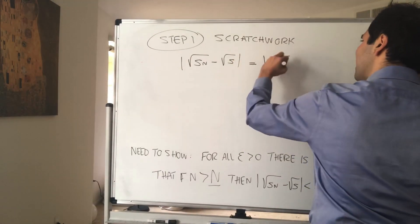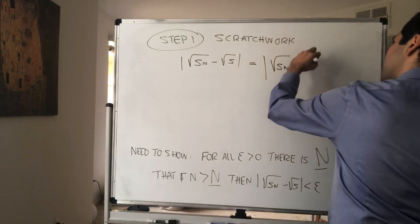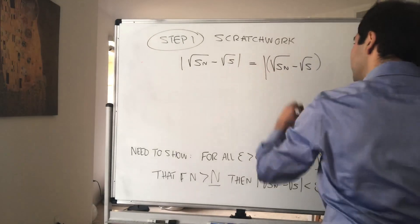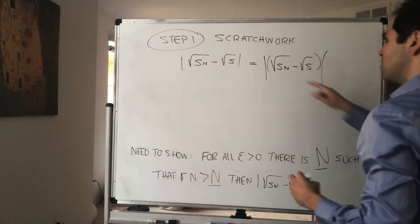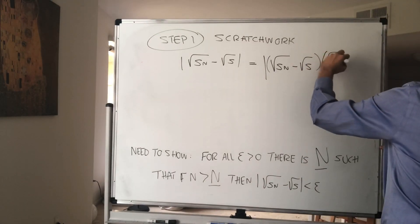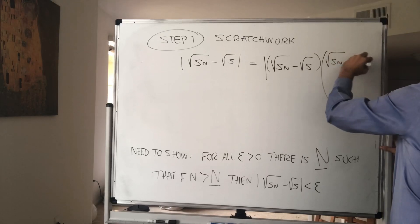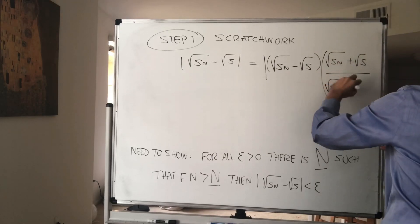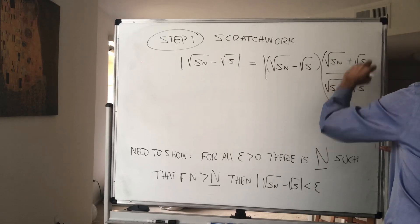So what you want to do, you want to take the square root of Sn minus square root of s and multiply it by square root of Sn plus square root of s, divided by square root of Sn plus square root of s.